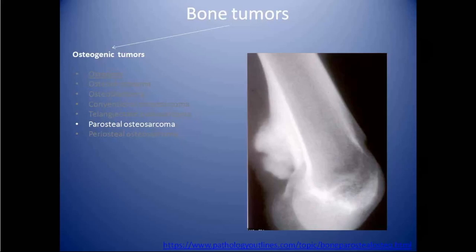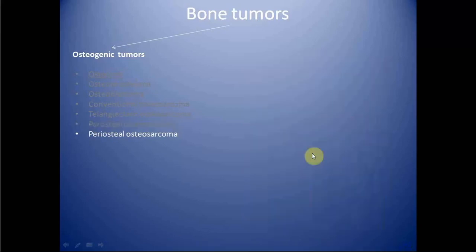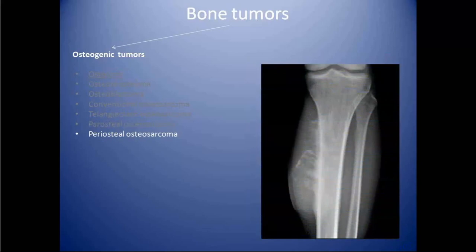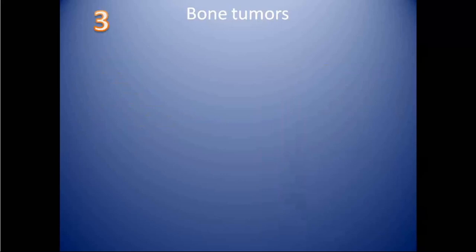In the early stage of parosteal sarcoma, we can have a string sign, which is seen as a radiolucent line that separates the tumor from the adjacent bone. Next is periosteal osteosarcoma, which is again a rare variant of osteosarcoma arising from the surface. It is of intermediate grade between conventional osteosarcoma and parosteal osteosarcoma.